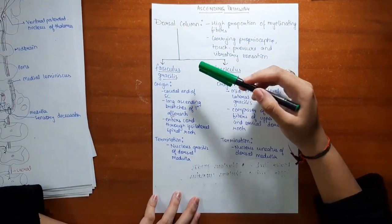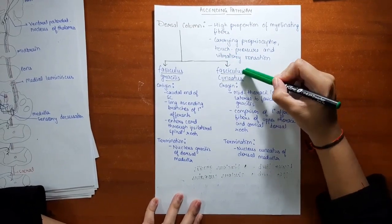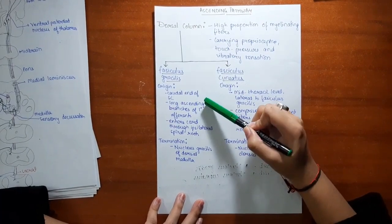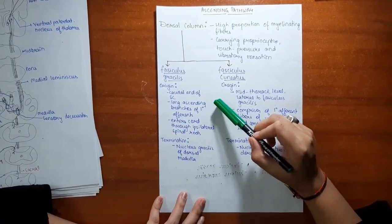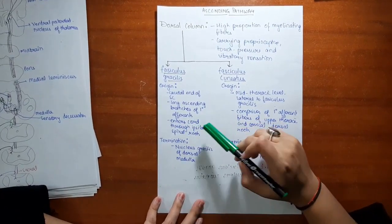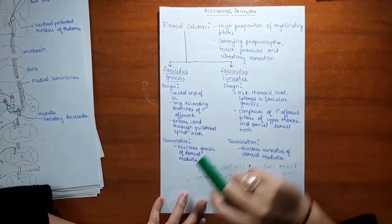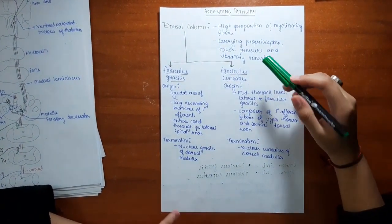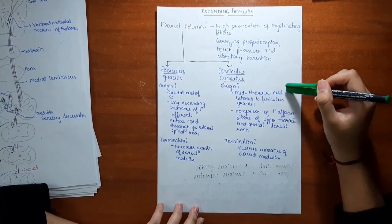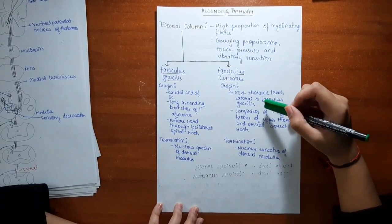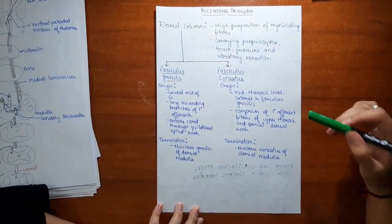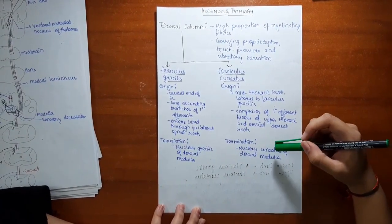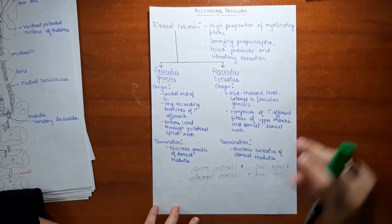The dorsal column comprises the fasciculus gracilis and fasciculus cuneatus. The fasciculus gracilis originates from the caudal end of the spinal cord, comprising long ascending branches of primary afferents. It enters the cord through the ipsilateral spinal root and terminates in the dorsal medulla in the nucleus gracilis. The fasciculus cuneatus originates from the mid-thoracic level and comprises primary afferent fibers of upper thoracic and cervical dorsal roots, terminating in the nucleus cuneatus of the dorsal medulla.